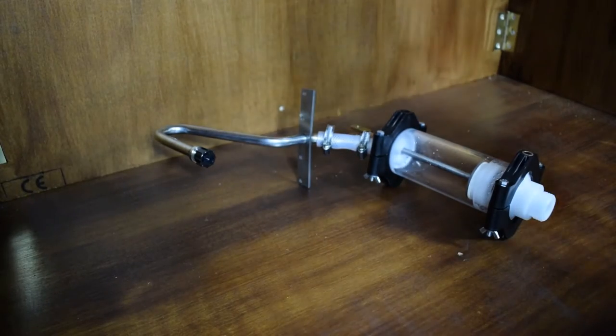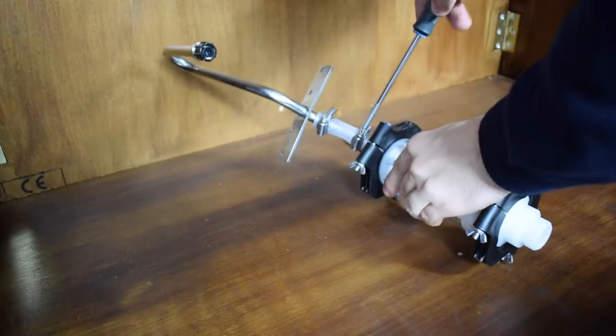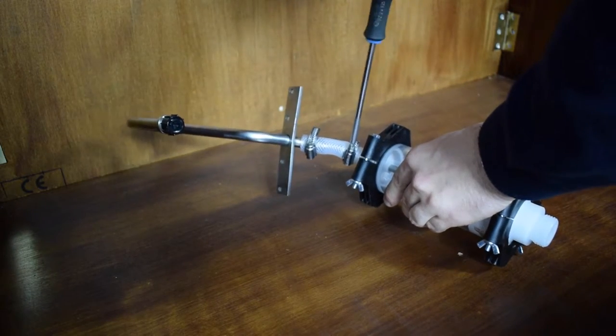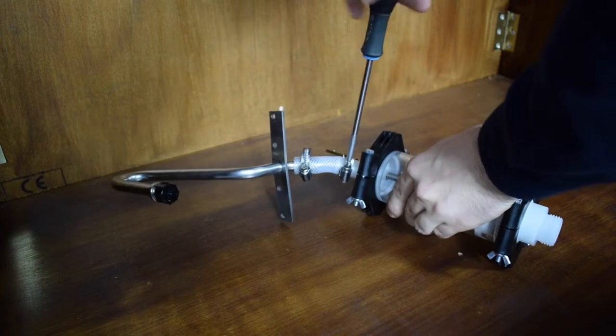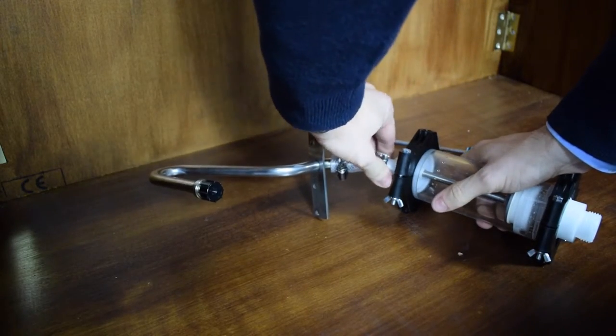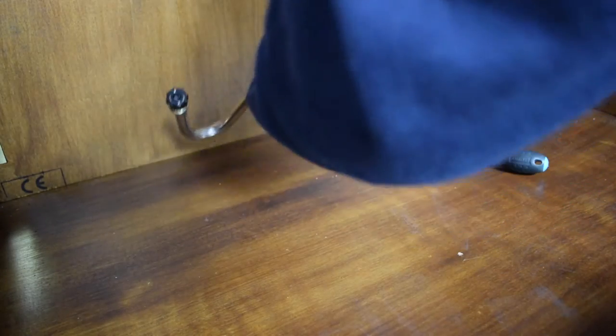The final step is to take your posi drive screwdriver and undo the Jubilee clip. Slide that up the tube towards the swan neck tap and pull the cylinder off the tube.